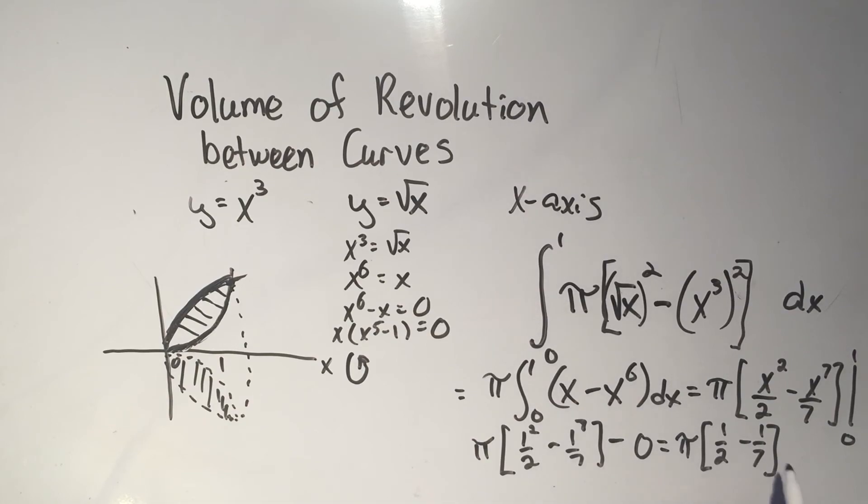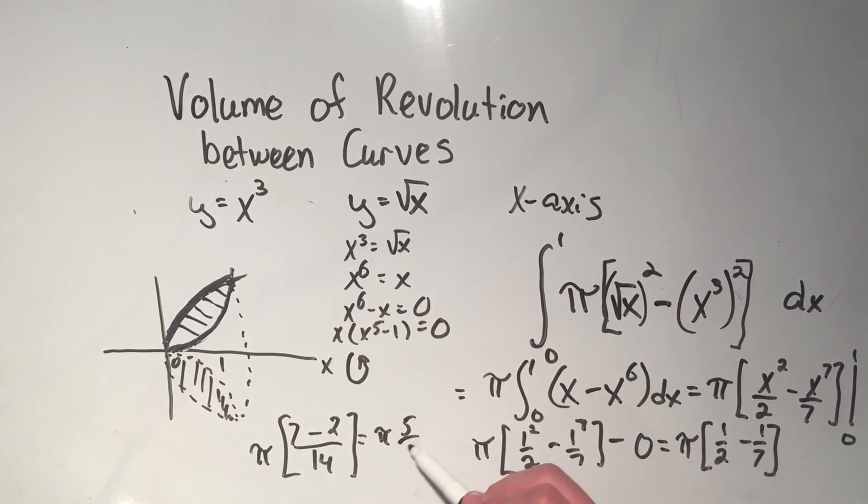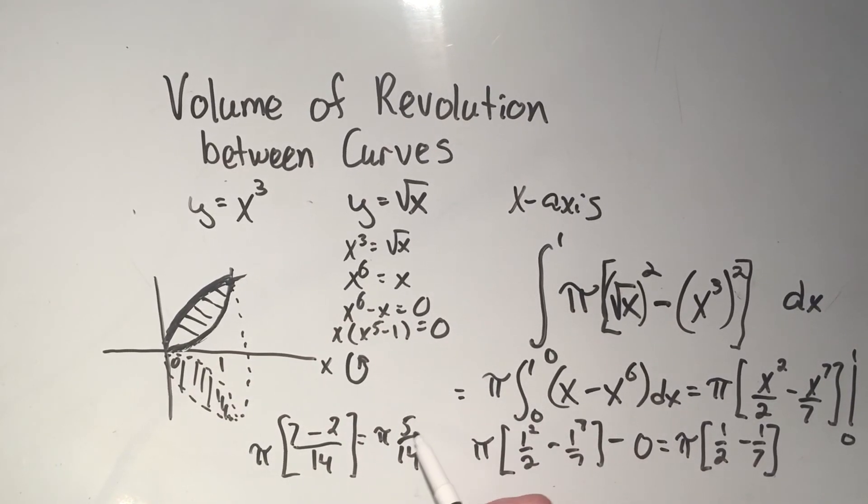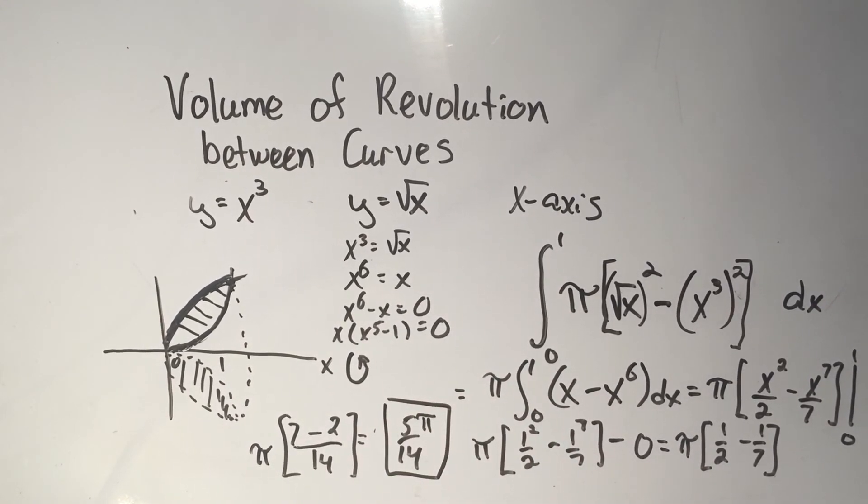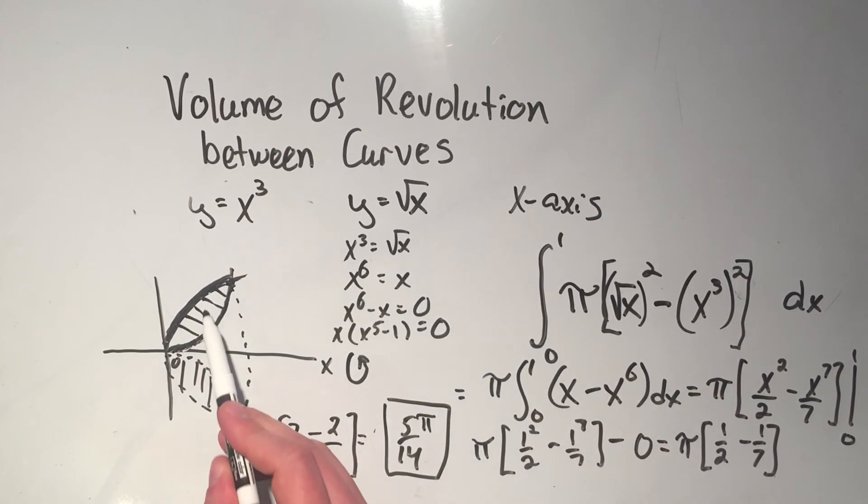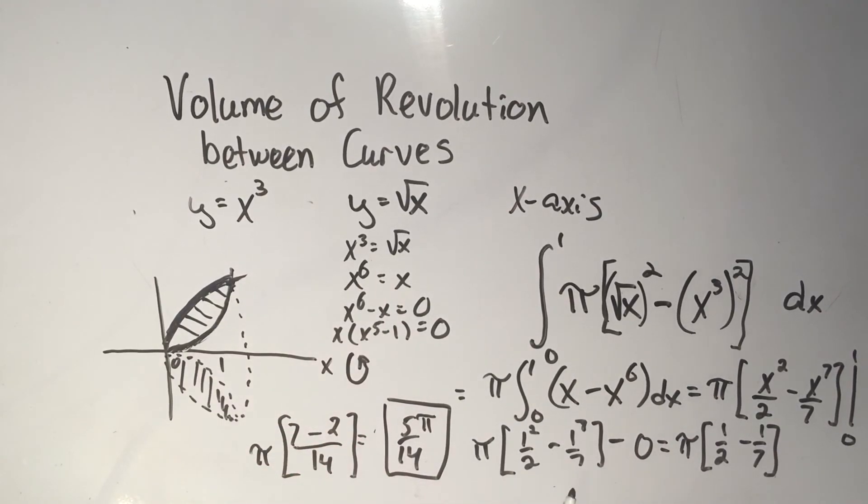One half minus a seventh. I can combine that pretty quickly by cross multiplying. It's going to be seven minus two over fourteen. So that's going to be five over fourteen. And there we go. I'll even write it like this, five pi over fourteen. So that is the volume of revolution between these two curves.